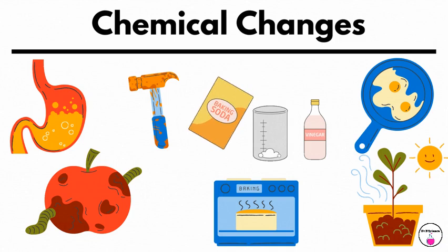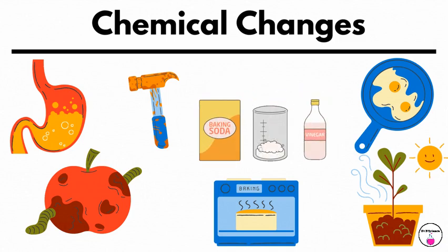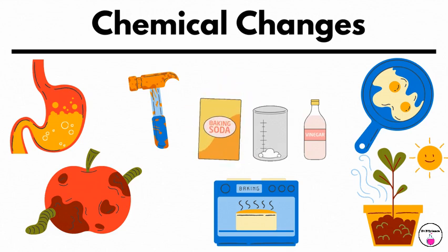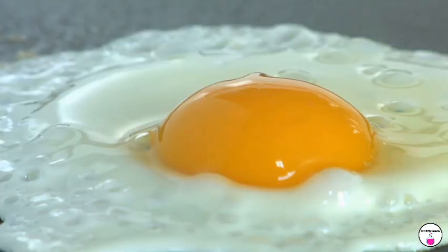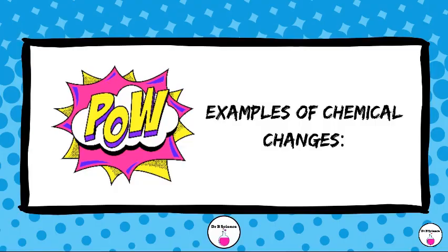Chemical Changes: A chemical change involves a transformation in which the chemical composition of a substance is altered, resulting in the formation of new substances with different properties. Energy changes often accompany chemical changes and are usually irreversible.